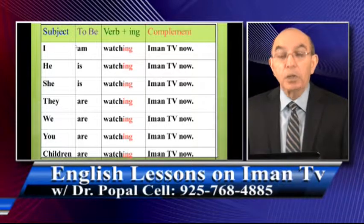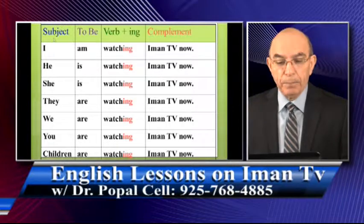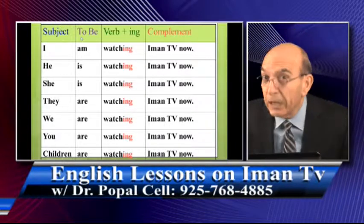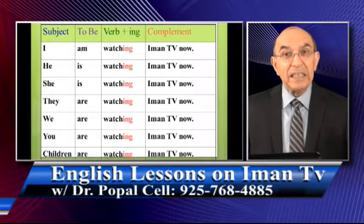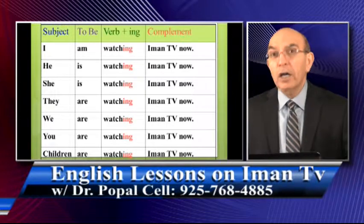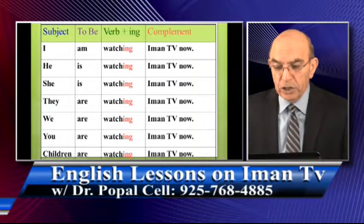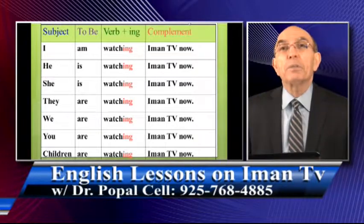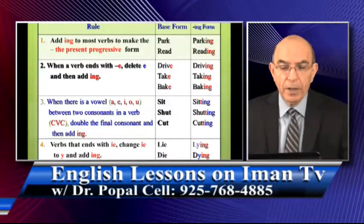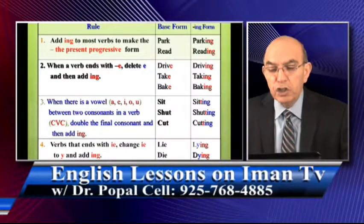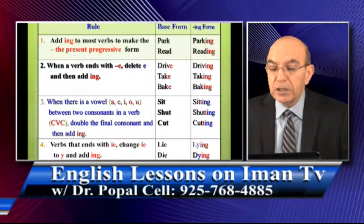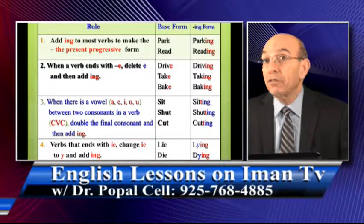The way you make the present progressive is: subject, a form of 'be' — 'is,' 'am,' or 'are' — plus verb plus '-ing,' then the complement or object. Rule number one: add '-ing' to most verbs to make the present progressive form.